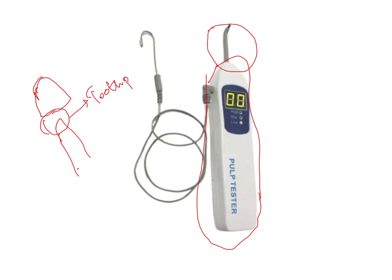A hook is placed in the patient's buccal mucosa or cheek to complete the circuit. Once the circuit is completed, the electrode passes current through the tooth. For example, if measuring the maxillary right central incisor, you first take readings from the maxillary left central incisor, the maxillary right lateral incisor, and both mandibular central incisors as control teeth, noting all their readings.